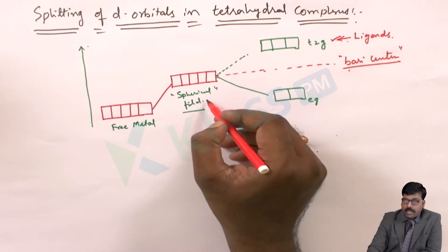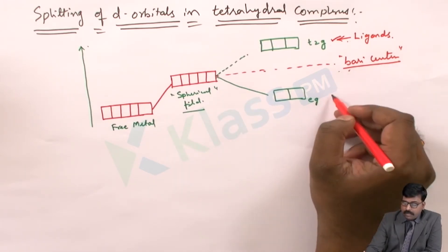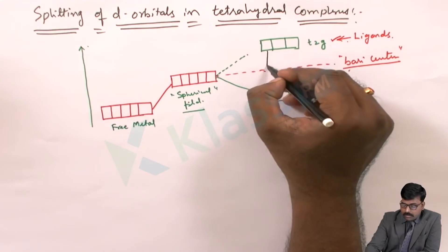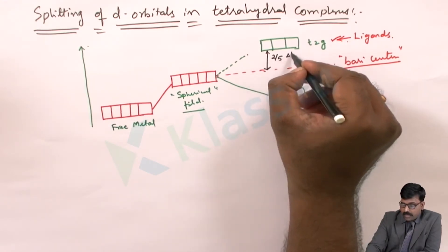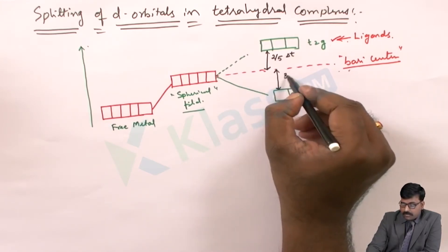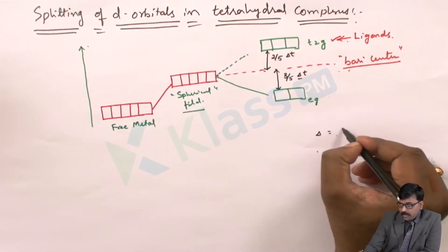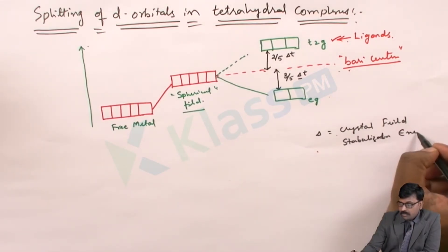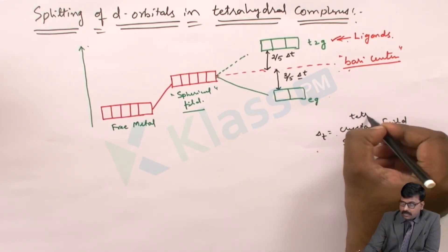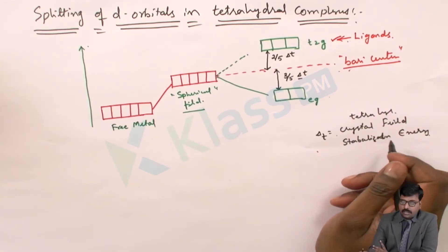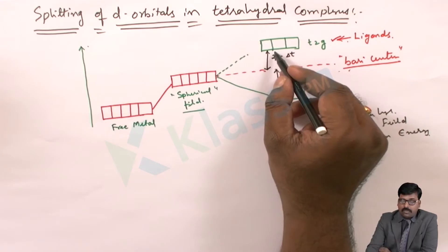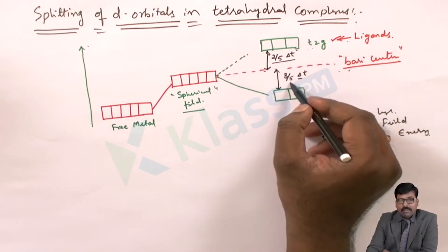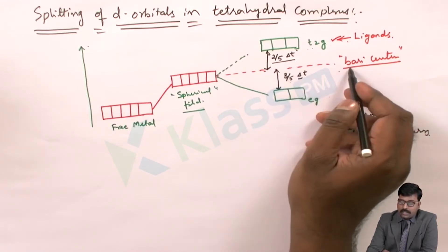Barycentre is the energy level with the spherical field. From the barycentre, the Eg energy level will decrease and the T2g energy level will increase. It is said that it is 2/5 of delta, and it is 3/5 of delta. Delta is the crystal field stabilization energy. Because we have 5 orbitals, 2/5 of delta T will be increased for the T2g, and 3/5 of delta T will be decreased downwards from the barycentre.